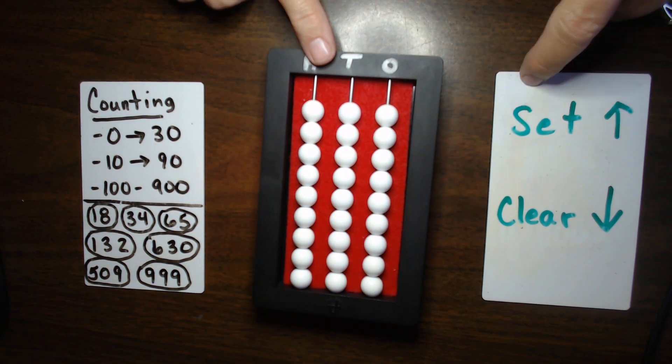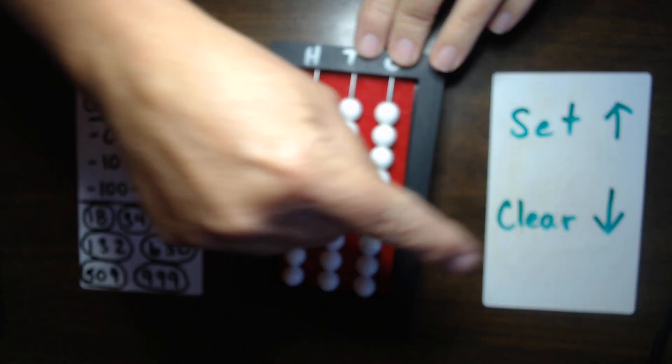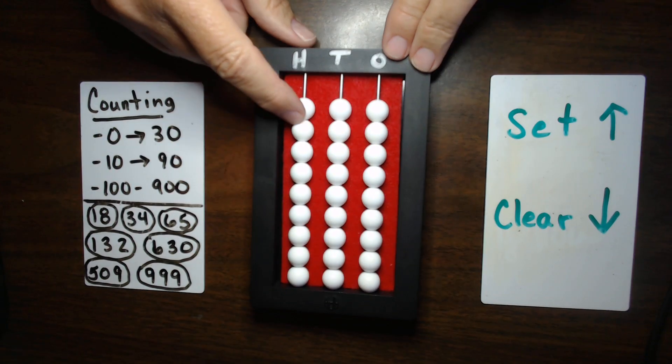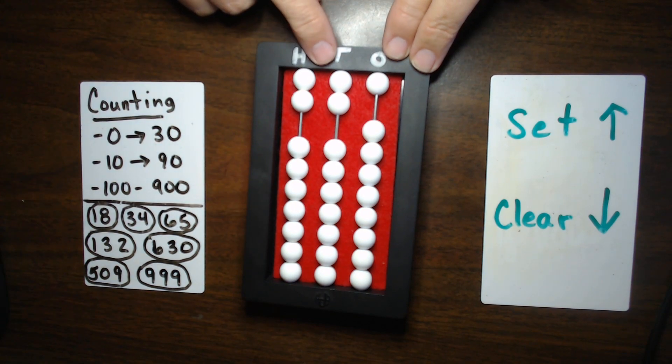There's two terms you need to know: set and clear. When you clear it, you push everything down toward the bottom, or toward your belly. And when you set a number, then you're pushing the beads up. You're setting the beads toward the top of the Abacus.